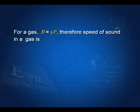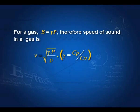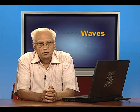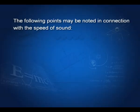For a gas, the bulk modulus is equal to gamma times P, where gamma is the ratio of Cp to Cv. Therefore, the velocity of sound is given by the square root of gamma P by rho. The following points may be noted in connection with the speed of sound.